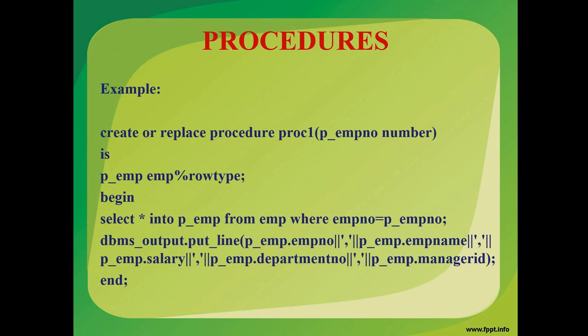And I am passing one argument, or we can also call it a parameter, P_EMP_NUMBER. By using this P_EMP_NUMBER variable, I am going to pass employee number. And based on that, I am going to select the details of that particular employee number.